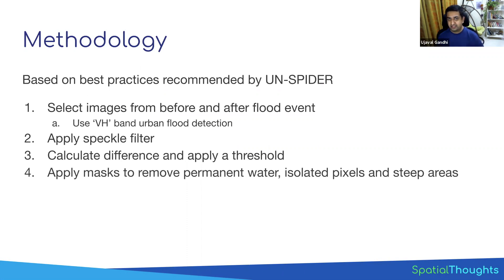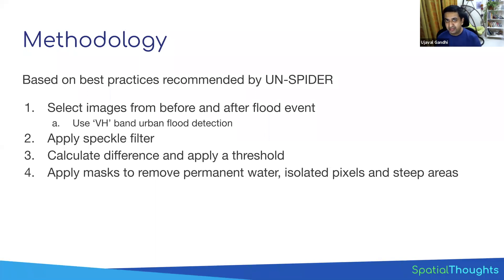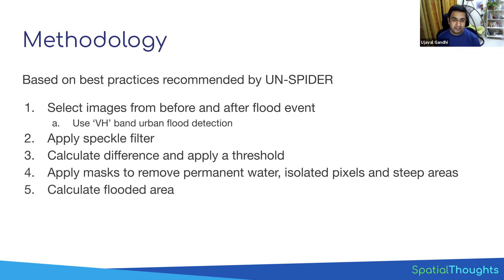Once we have the initial flood estimate, not all pixels will be valid floods. We apply masks to remove permanent or semi-permanent water bodies, since those aren't considered floods. We also use elevation data to remove pixels identified as flooded that are on a slope, since water won't stay on a slope. We also remove isolated pixels, as we're interested in larger flooded areas — single 10-meter pixels are likely misidentifications. After filtering, we end up with robust flood data to calculate the flooded area per district or region.